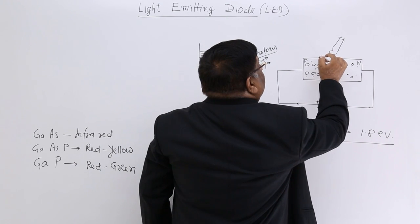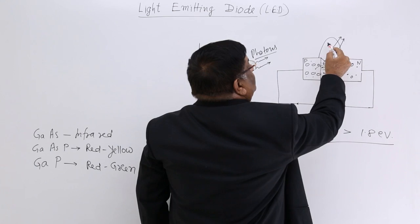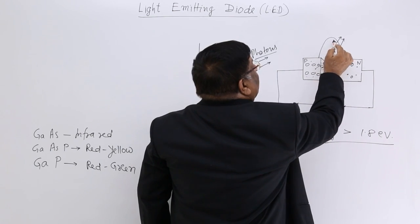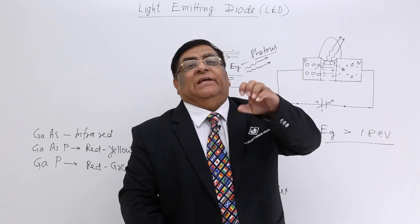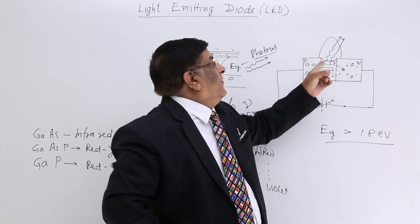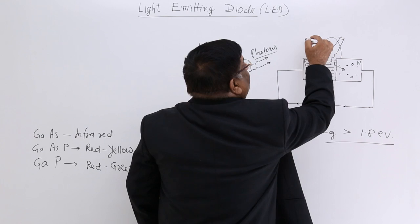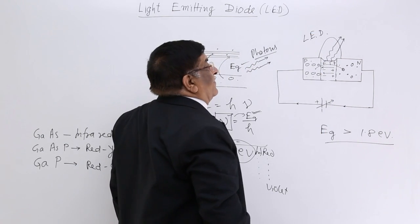And that photons go from here. Now here we put an emulsion or a plastic dome. When these photons are striking this dome, we use such a material which will emit the light. So this light is emitted from here and this is what we call is LED, light emitting diode.